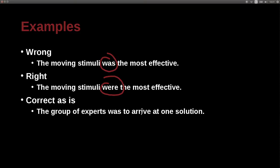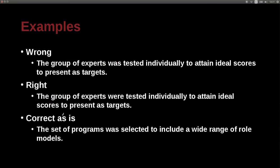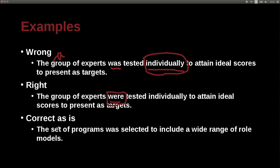'The group of experts was to arrive at one solution' — this is correct because 'was' is used and it's a single group. However, 'the group of experts was tested individually' is wrong; it should be 'were tested individually.' Why? Because 'individually' means one by one — so we tested them one by one, not as a group. One by one, they were tested, so it's 'they were,' not 'it was.'